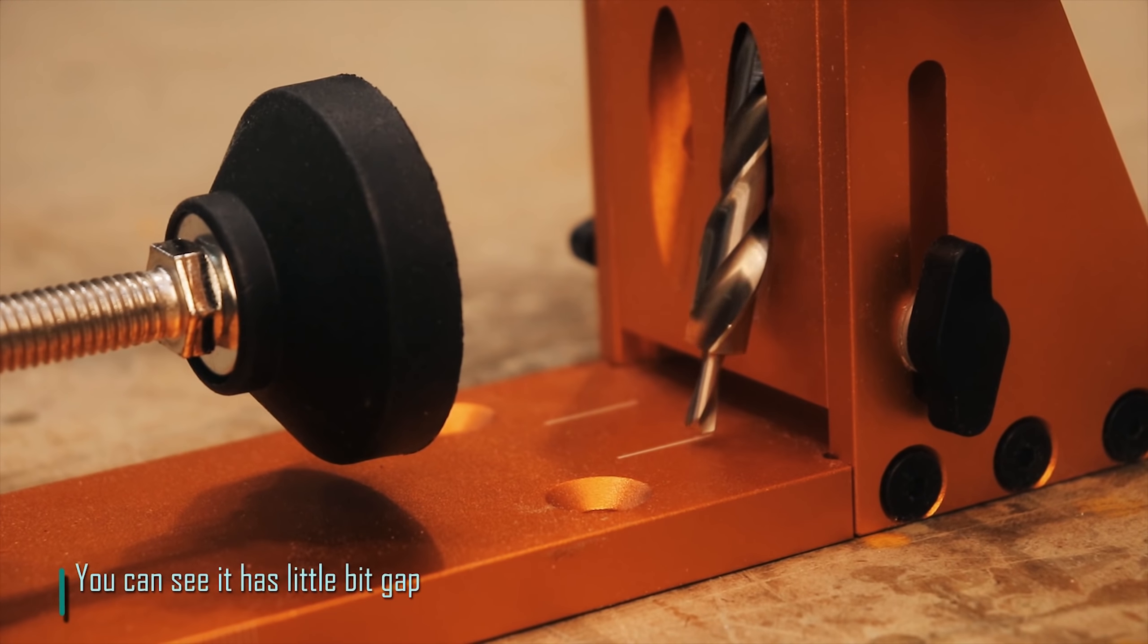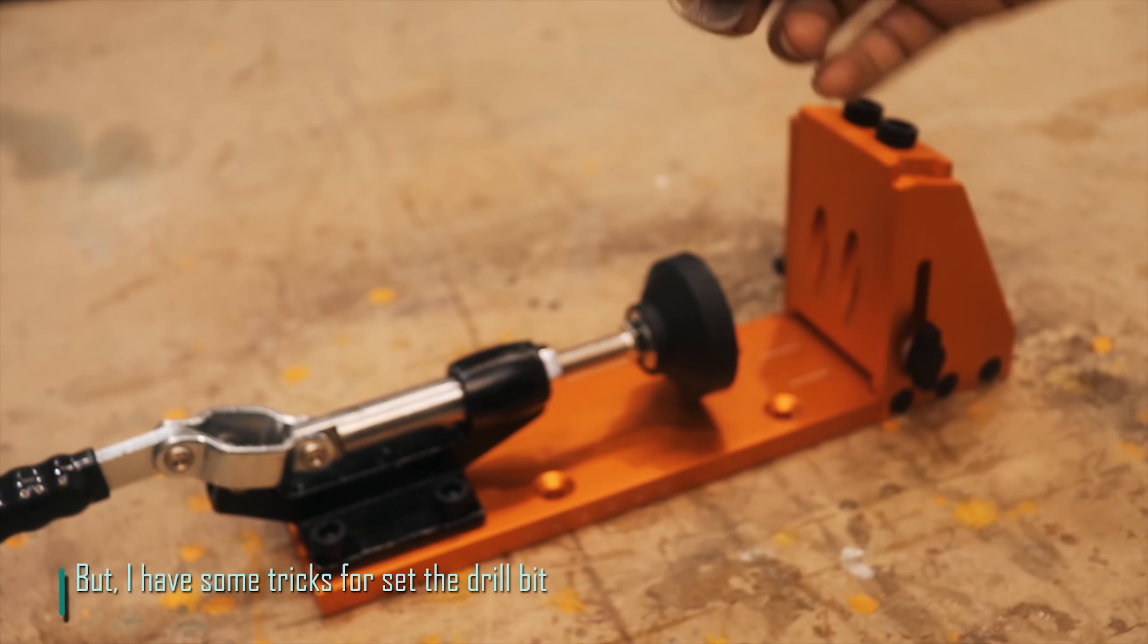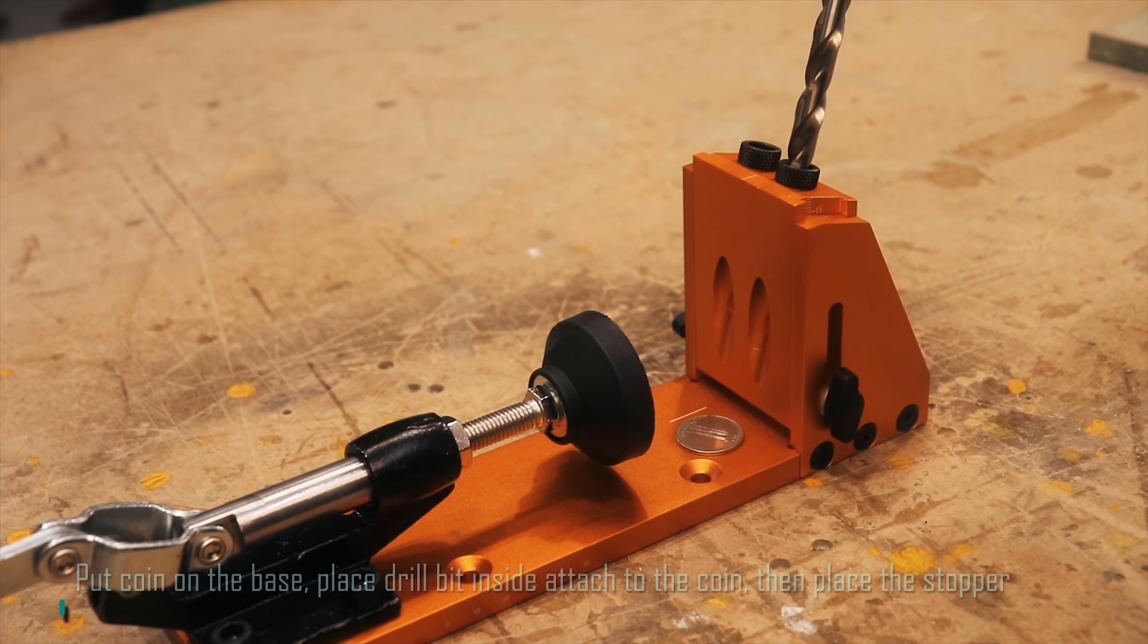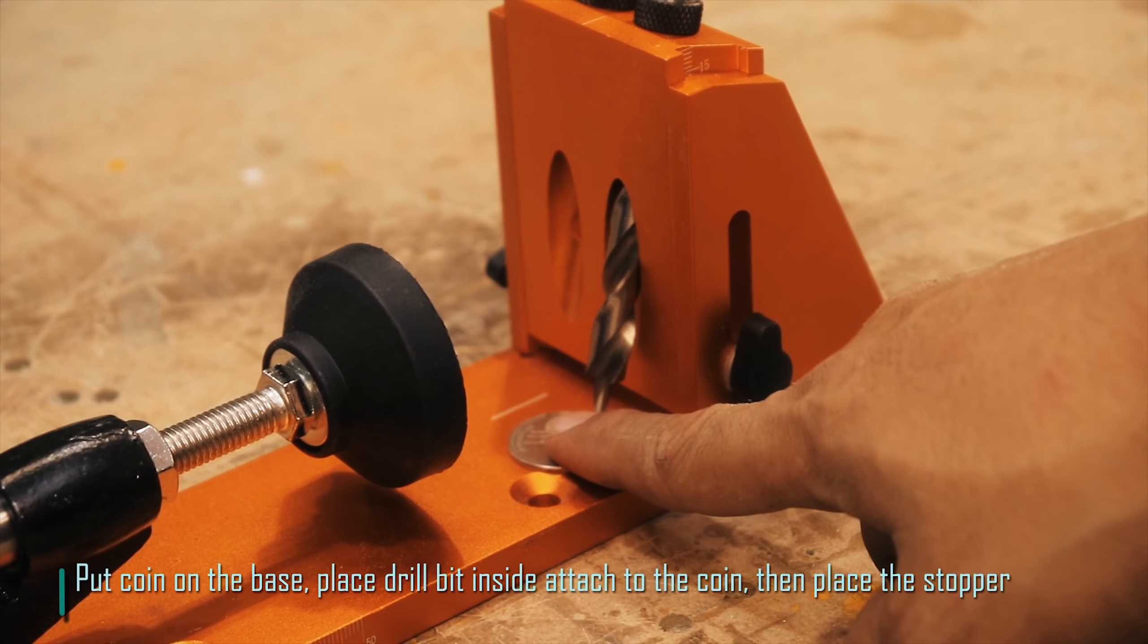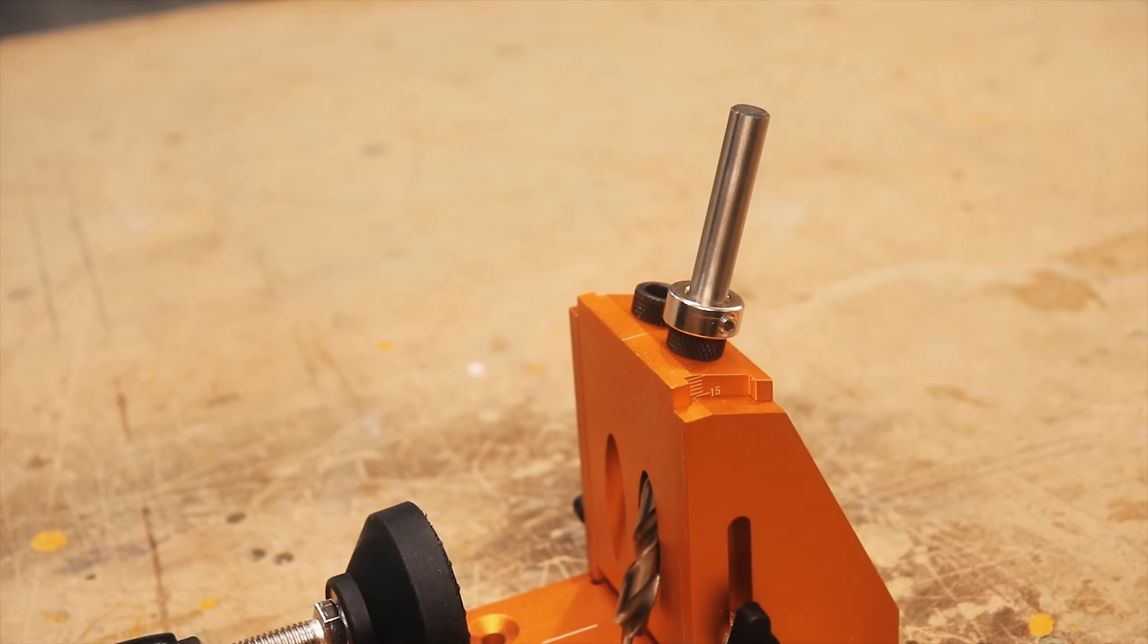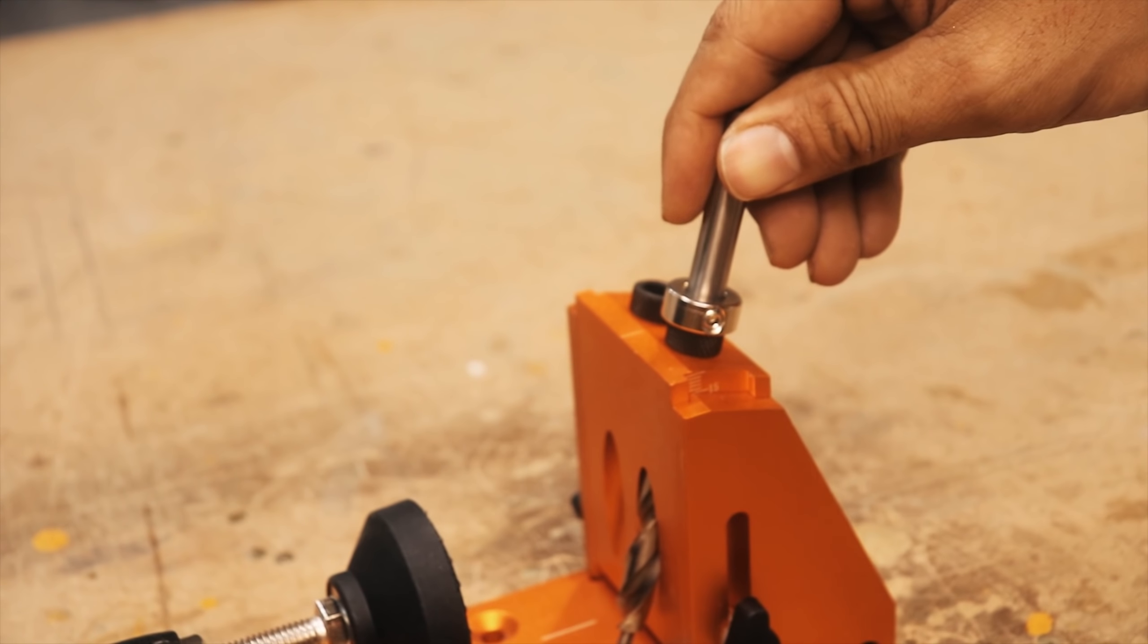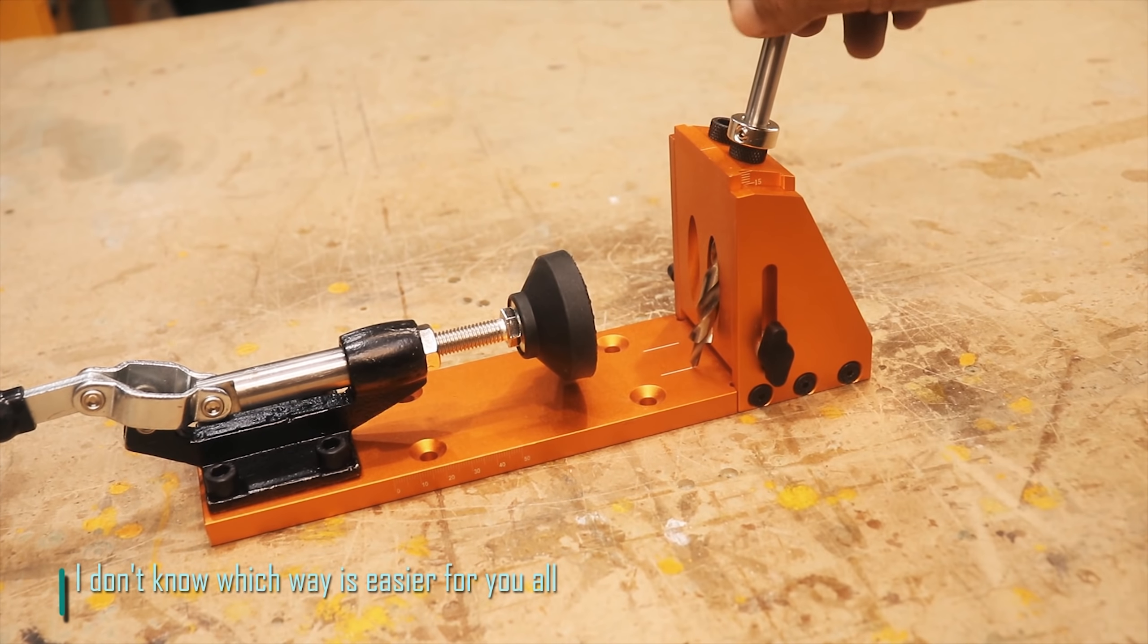You can see it has a little bit of gap. But I have some tricks for setting the drill bit. Put a coin on the base, place the drill bit inside attached to the coin, then place the stopper. I don't know which way is easier for you all.